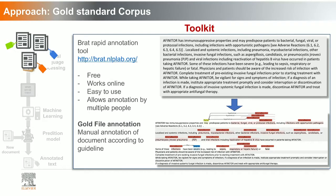How are we building gold standards at Elsevier? We use BRAT, a freely available toolkit that works online, is easy to use and install, and allows multiple annotations from different annotators. On the right-hand side there is an example of text where annotations have been done. The words you are interested in are tagged along with the relations between them — how they are related to each other.